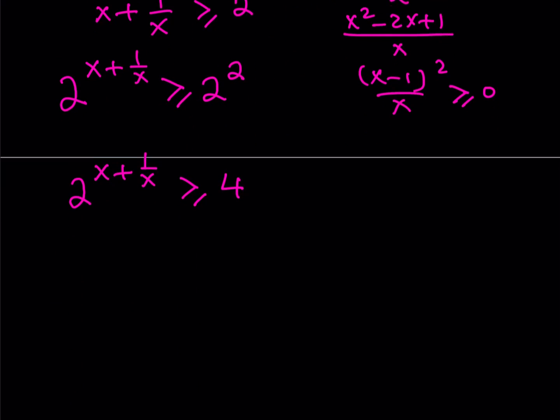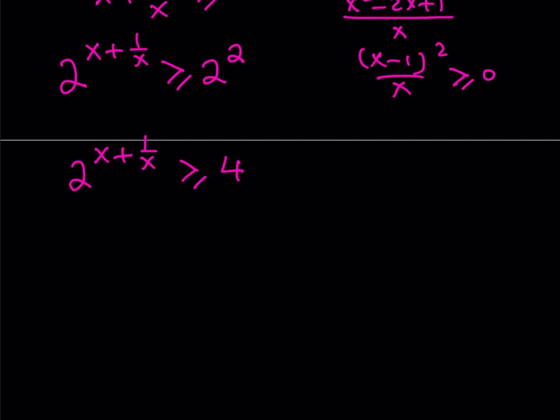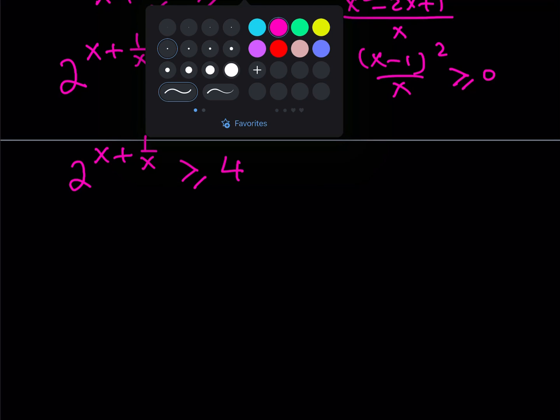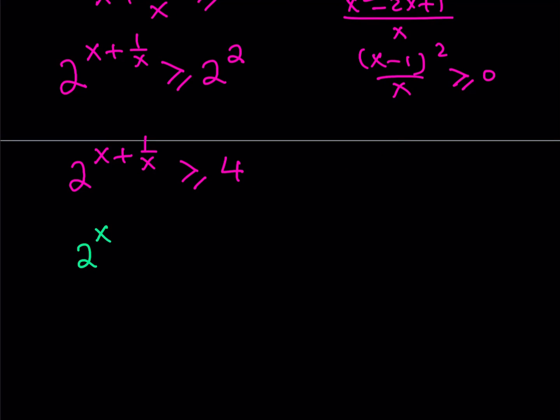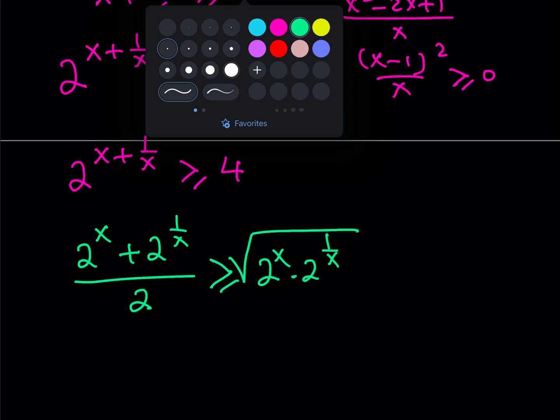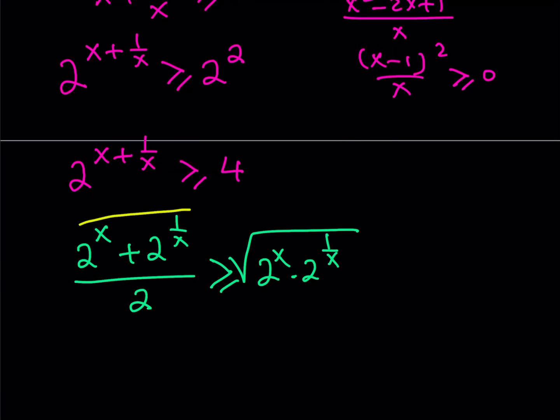So we're kind of getting the same thing from here. So let's go ahead and use AMGM now with two terms, which is 2 to the power of x and 2 to the power of 1 over x. So here's how AMGM goes. You add the numbers, divide by 2, and then you multiply the numbers and square root. That's the geometric mean. And AMGM says that the arithmetic mean is always greater or equal to the geometric mean.